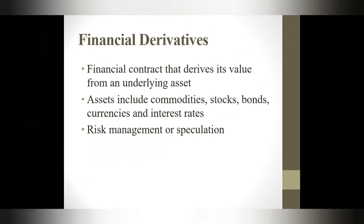First of all, we need to understand what derivatives are in finance. A derivative is basically a financial contract which derives its value from an underlying asset. The buyer agrees to purchase the asset on a specific date at a specified price. Assets include commodities, stocks, bonds, and currencies, and financial derivatives are used in all these assets.